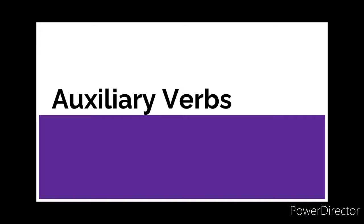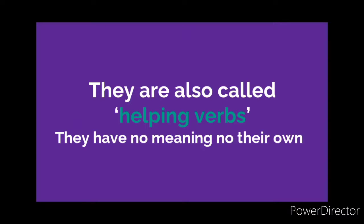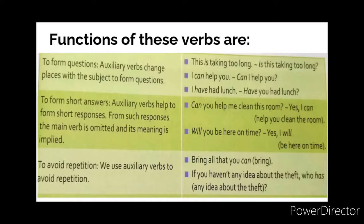Let's start with grammar chapter 4: auxiliary verbs. Before we begin, what are auxiliary verbs? They are also called helping verbs. They do not have a meaning on their own — they help the main verbs in forming a sentence. If we use only the helping verbs, they will have no meaning. They need the main verb to form meaning and a grammatical sentence.